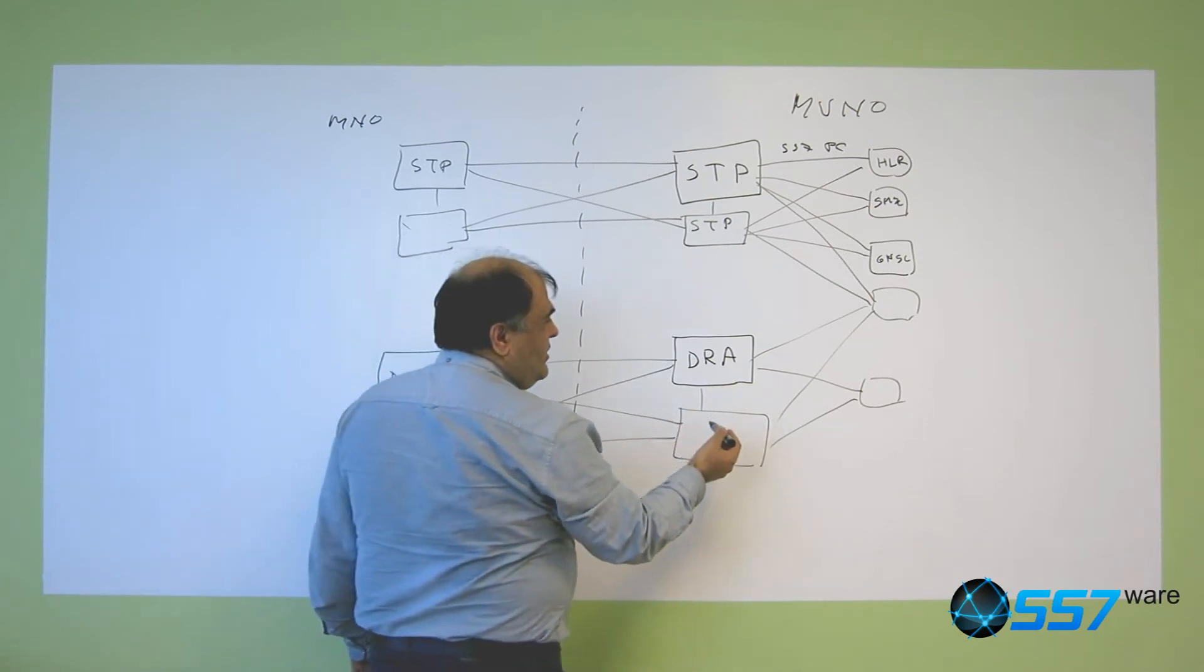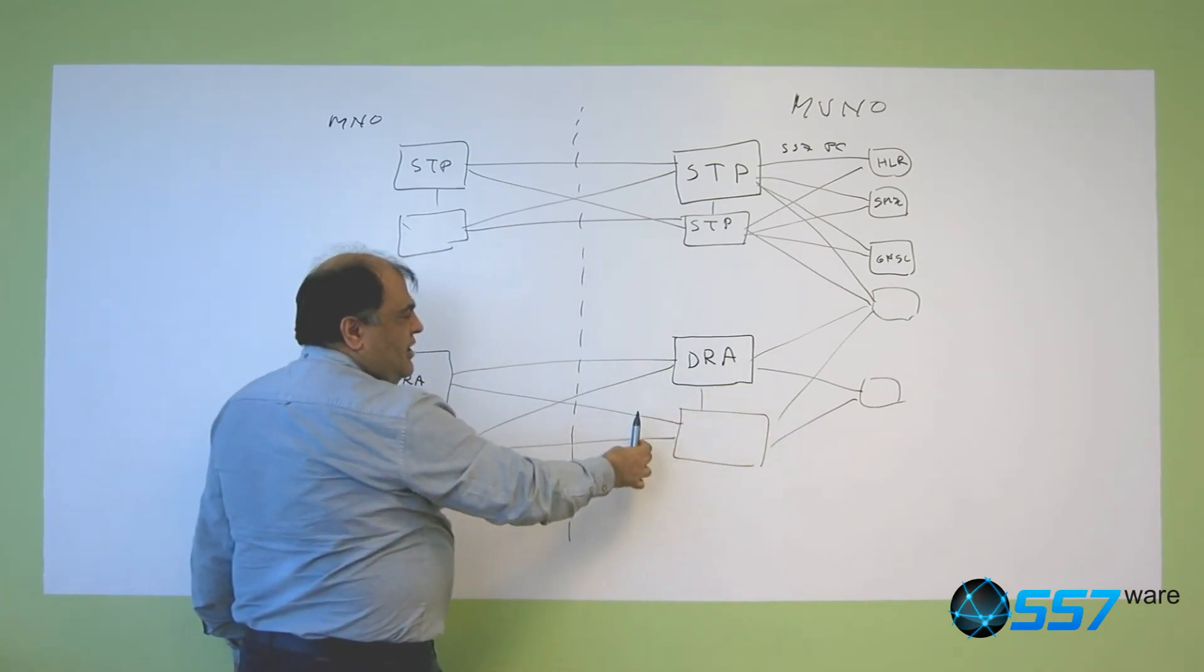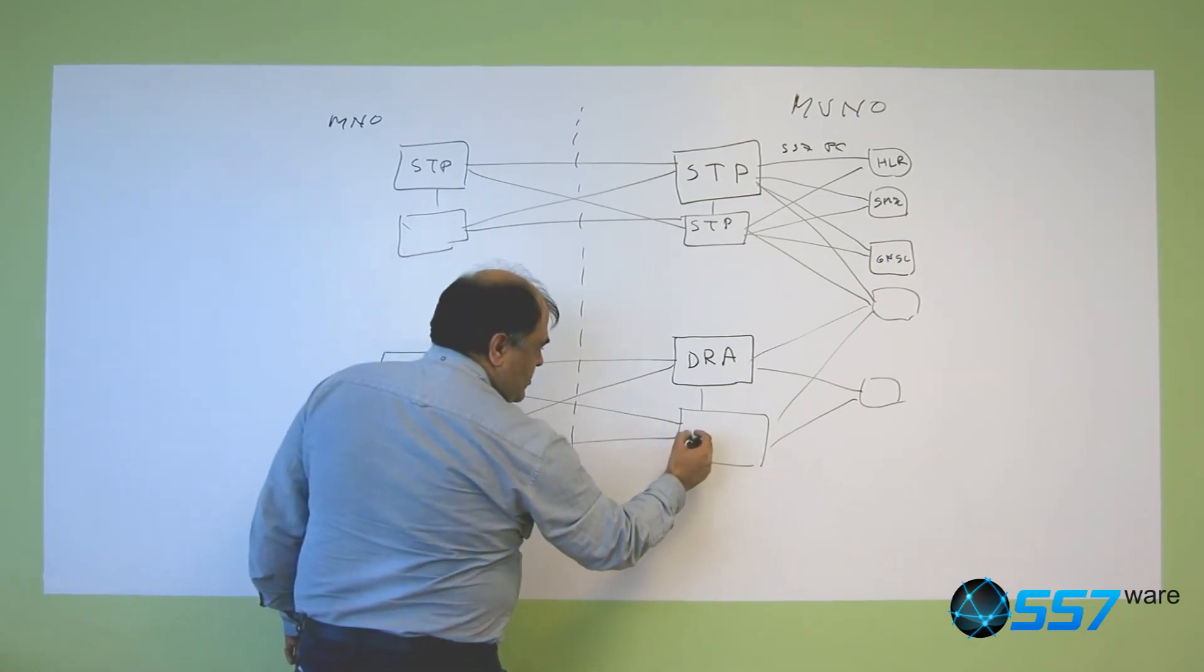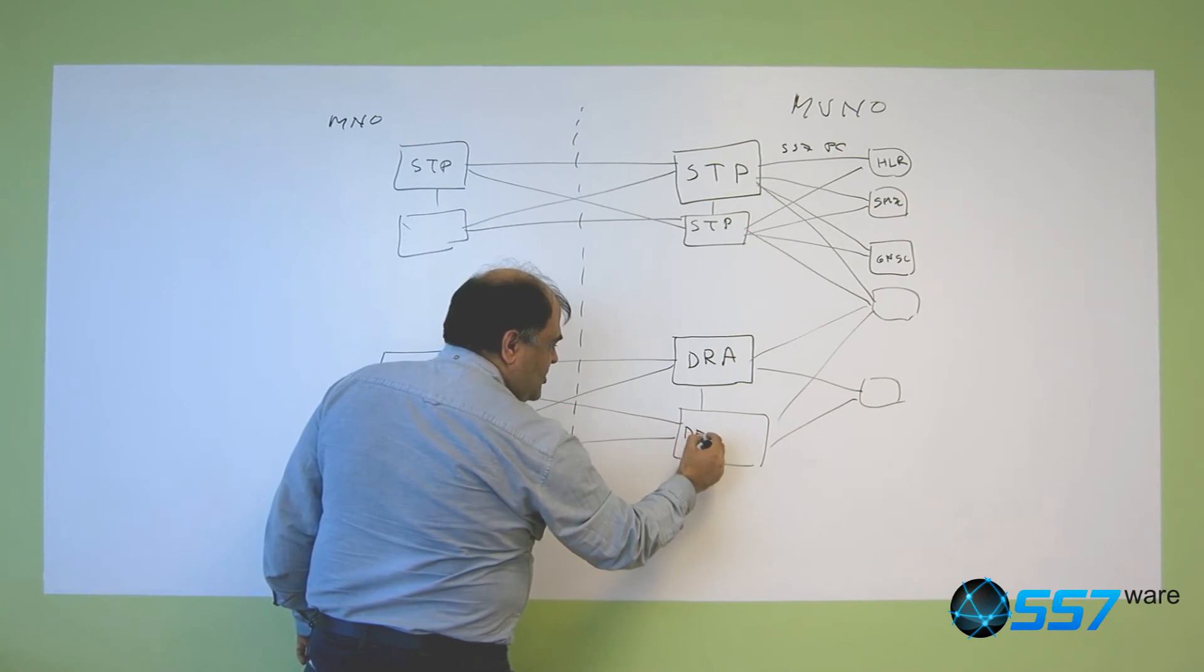Also for diameter the domain can change. And the diameter can effectively hide the topology behind. It's something called the diameter edge agent.